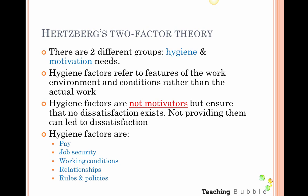Some examples of hygiene factors are: pay, job security, working conditions, relationships, and the types of rules and policies. Now, some of those were motivators under Maslow's theory — pay, job security, and relationships were all actual motivators in Maslow's theory. But according to Herzberg, they don't provide any motivation. They need to be provided in the workplace, but they just ensure that an employee is not dissatisfied.